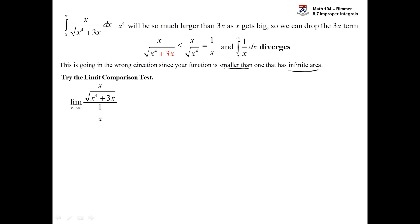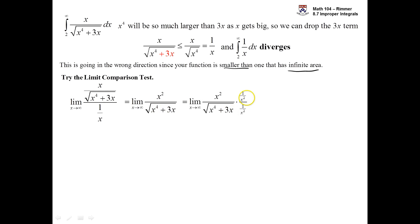If we divide by 1 over x, that's the same as multiplying by x, so we end up with x squared over the root of x to the fourth plus 3x. The order of division doesn't matter — f over g or g over f both work. To evaluate this limit, we multiply both numerator and denominator by 1 over x squared, taking the highest power in the denominator. The numerator simply becomes 1.